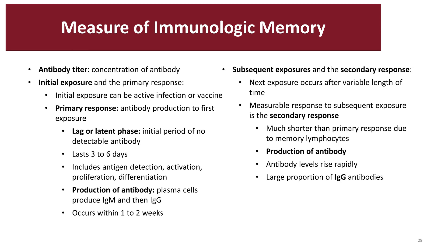Subsequent exposures and secondary responses are much shorter than the primary response due to memory lymphocytes. The secondary response will generate a larger amount of antibody, the antibody levels rise rapidly, particularly the IgG antibodies.